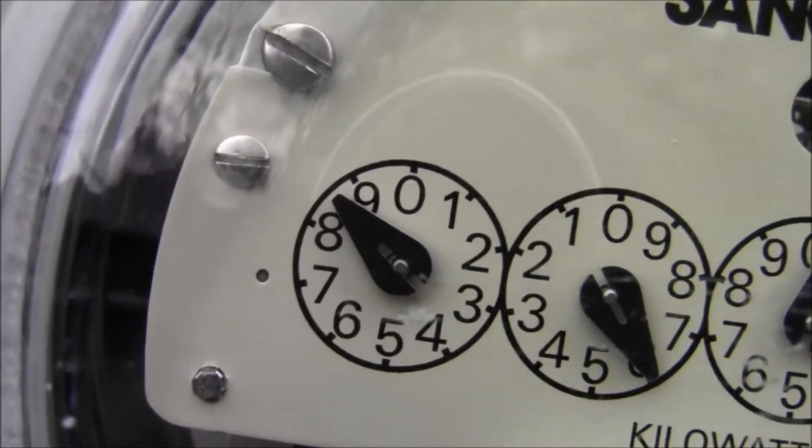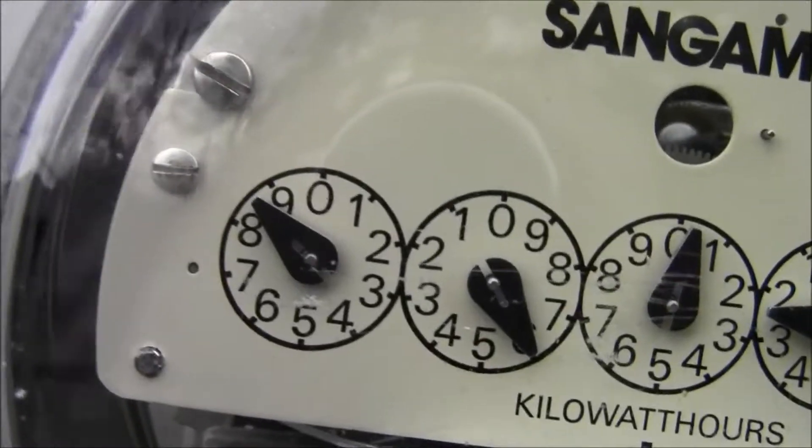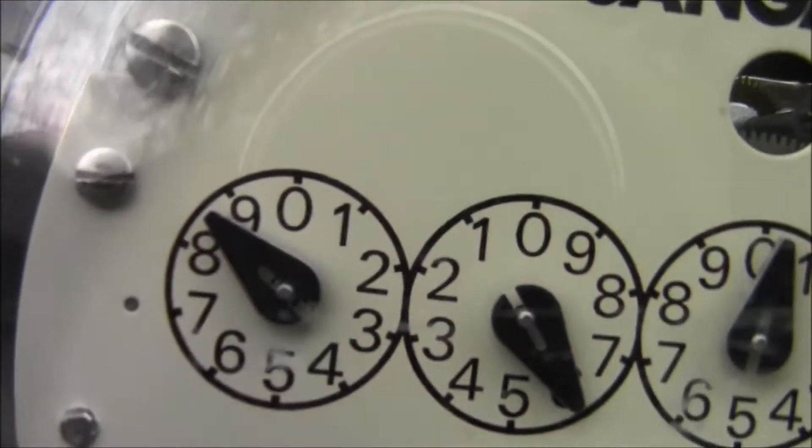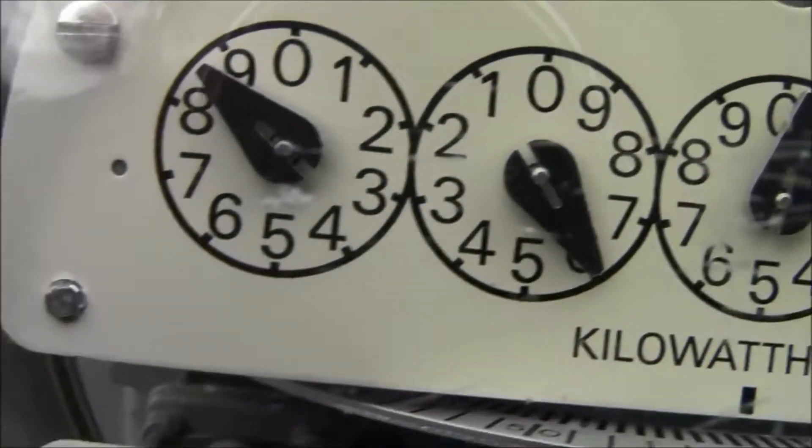You always read the lower number when the dial is between positions. If it's between zero and nine, it's the lower number. So you go with the numbers: zero, one, two, three, four, five, six.